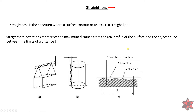Straightness is the condition where a surface contour or an axis is a straight line. Here we have the tolerance and this is the contour of the part and the evaluation of the straightness. Straightness deviation represents the maximum distance from the real profile on the surface and the adjacent line.